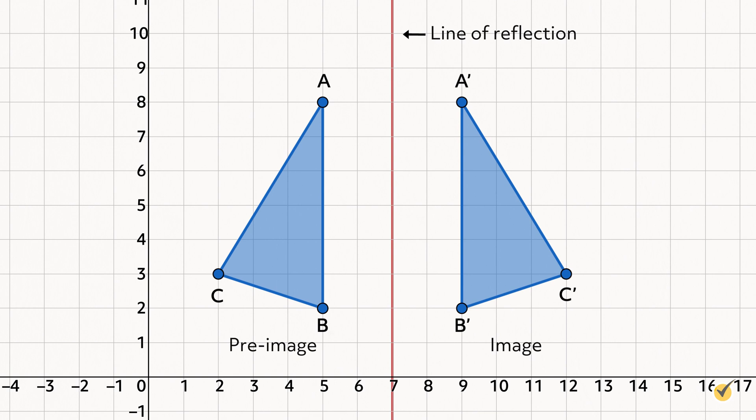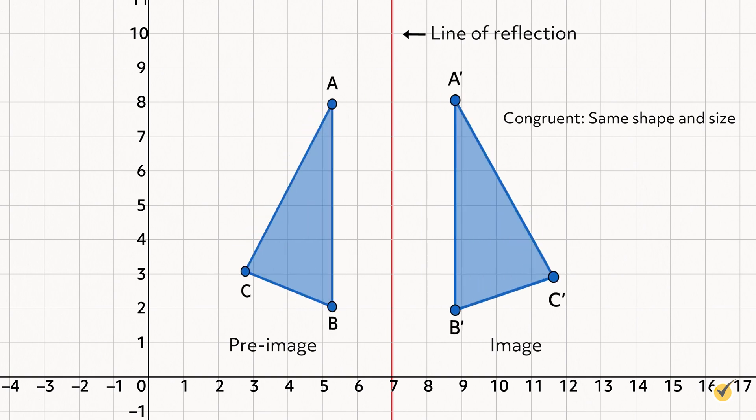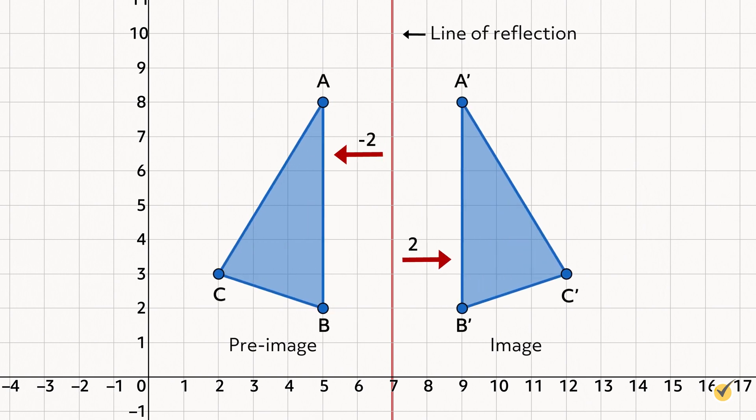Prime notation designates the figure that is the image. Point A on the pre-image corresponds to point A' on the image, and so forth. Now, there are a few things to notice here. Firstly, the pre-image and image are congruent, but flipped. You'll also notice that all corresponding points on the pre-image and image are the same distance from the line of reflection, but in the opposite direction.